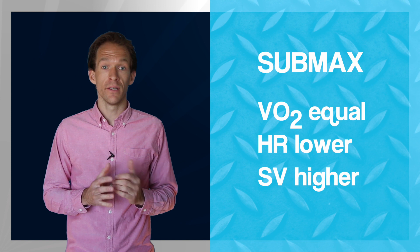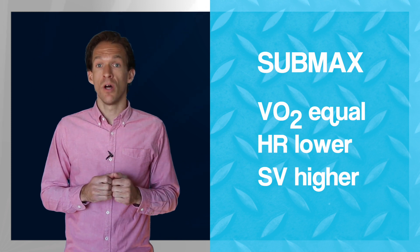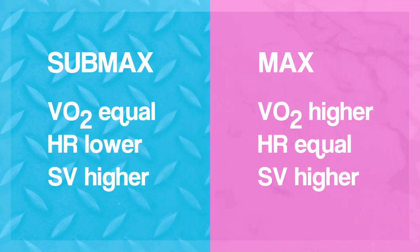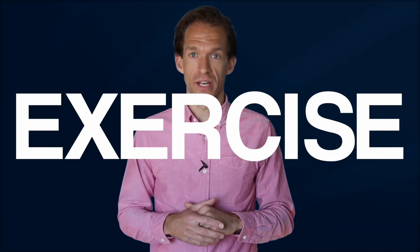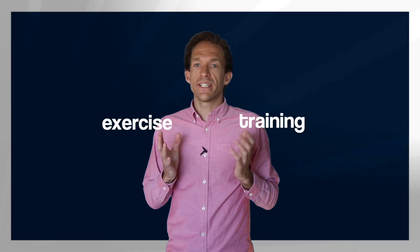Once you understand the underlying components of the Fick equation, you can start measuring and playing with those variables such as heart rate or VO2, either in submaximal or maximal conditions. Although the underlying pathology and physiological limitations are different for athletes, respiratory patients, or cardiac patients, the key message is the same: exercise.